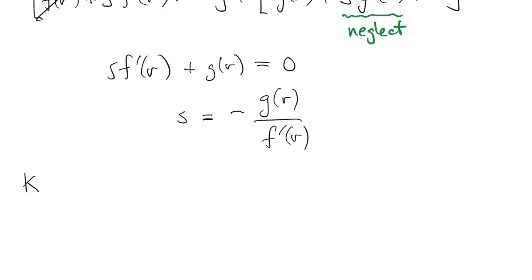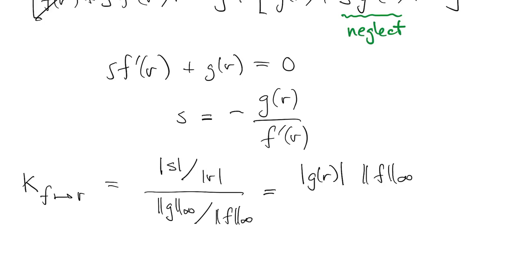So when we talk about a condition number of this problem, we look at the relative change in the root divided by the relative change in the function, which is the data. Putting in what we found for s, we get this fraction.